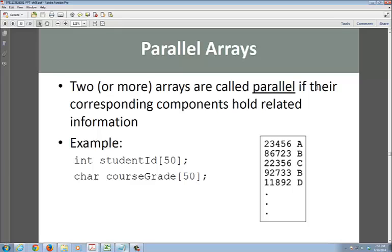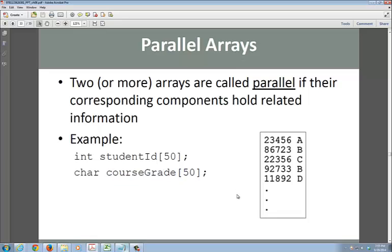That's the key thing. So if you look at an int as size 50 for student ID and a char for course grade size 50, these are parallel. Here's an example: this student has a grade of this letter and so on. So they're parallel arrays.